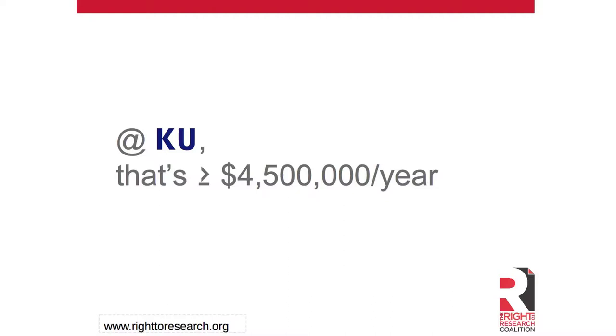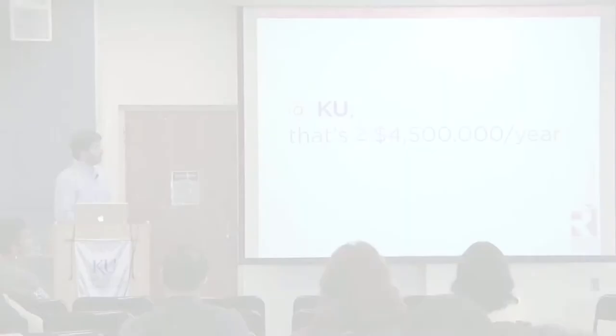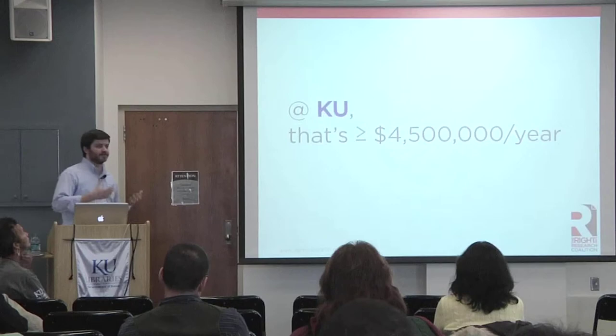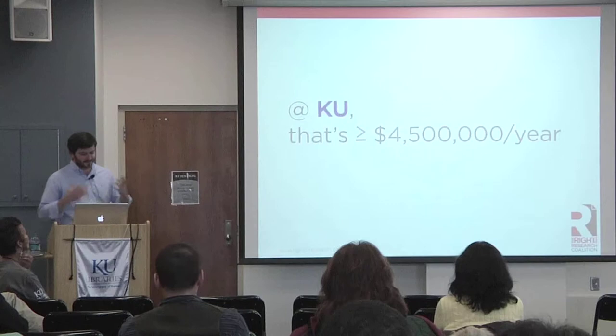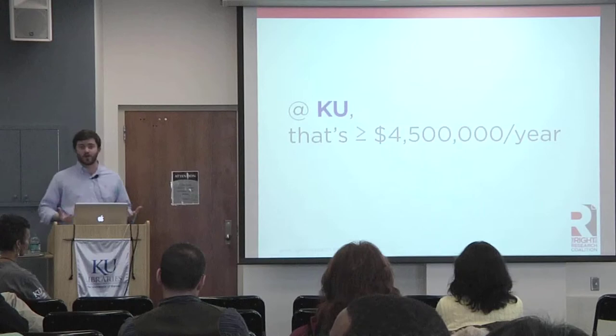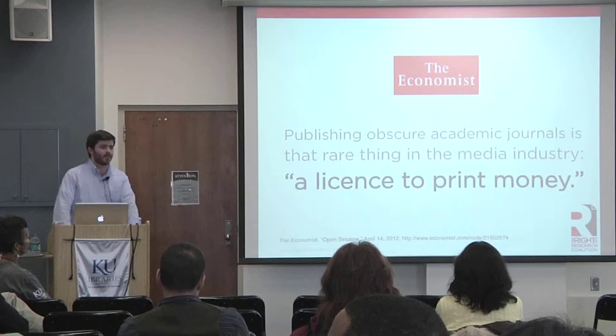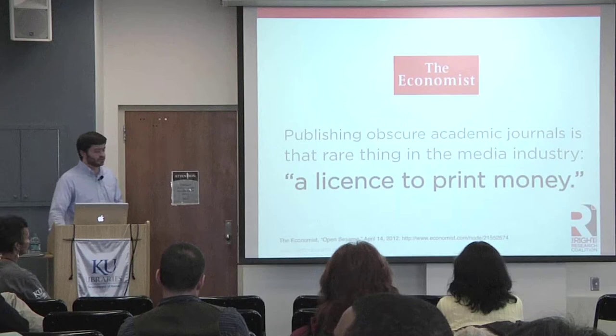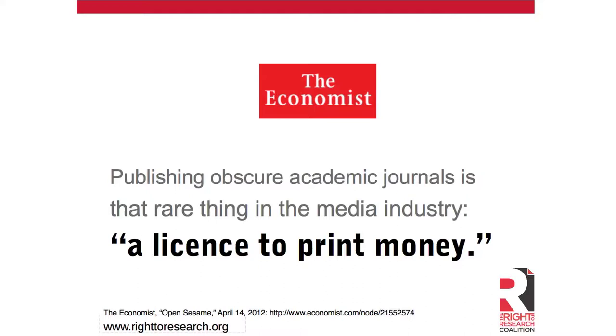The University of Kansas spends quite a lot per year on electronic access to journal subscriptions. For a long time this was an issue mainly among librarians and publishers, but big high-profile media outlets have really started to take notice. Last year, The Economist published a series of articles about academic publishing and open access, where they actually called academic publishing, quote, 'a license to print money,' which I think is pretty disturbing. I'll talk in a minute about how the business of academic publishing has gotten a long way from the foundations it was built to serve.